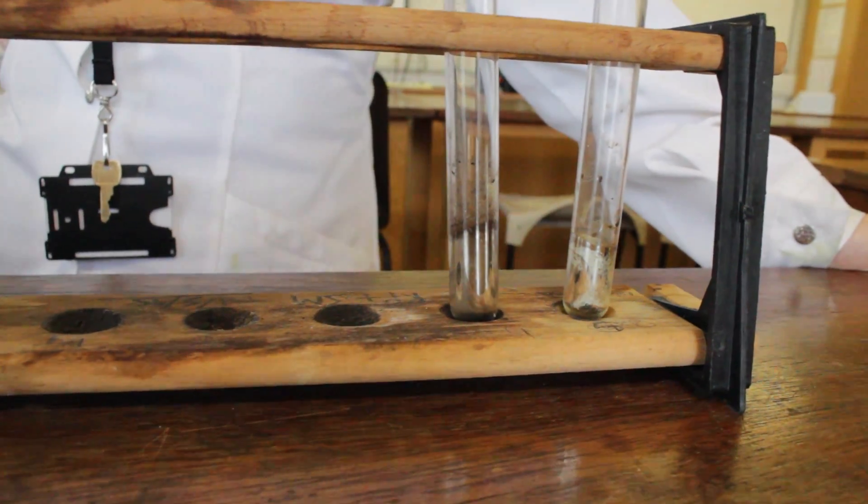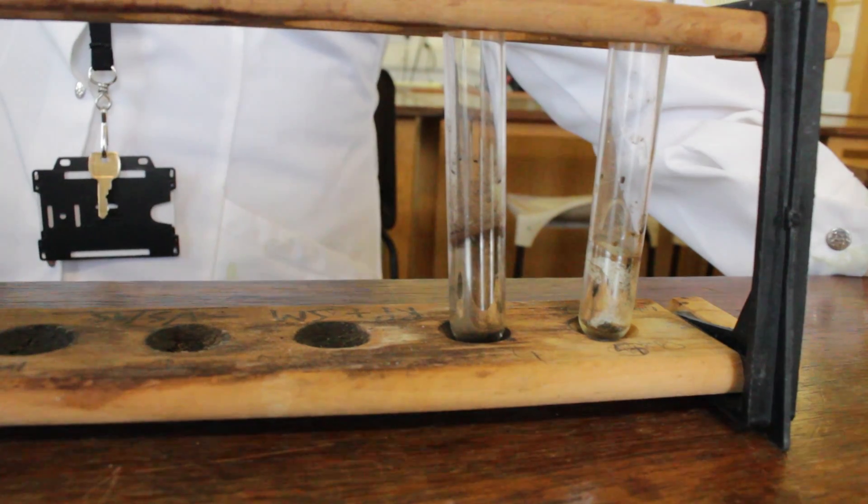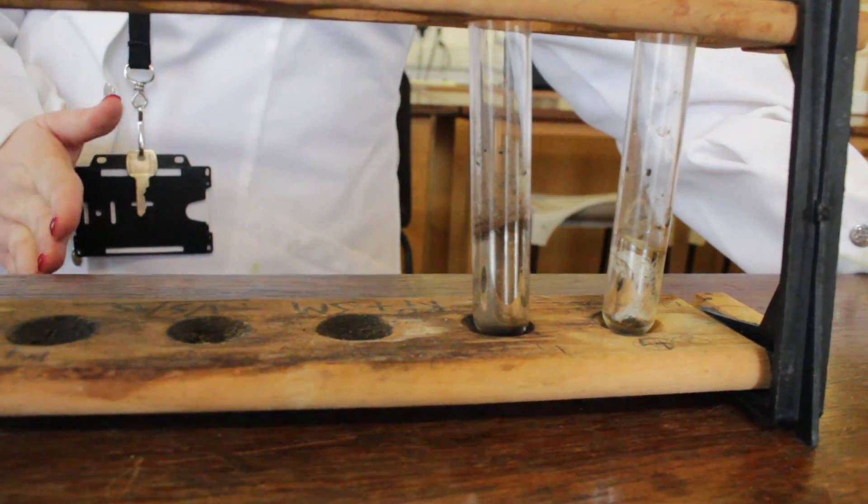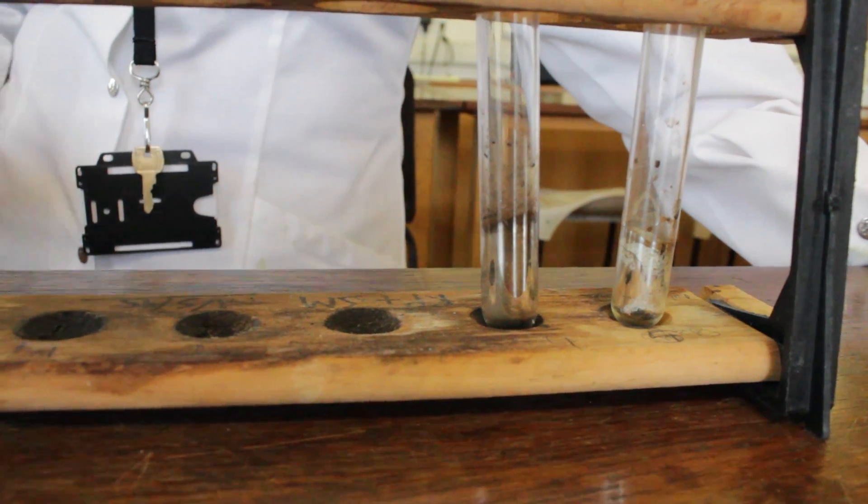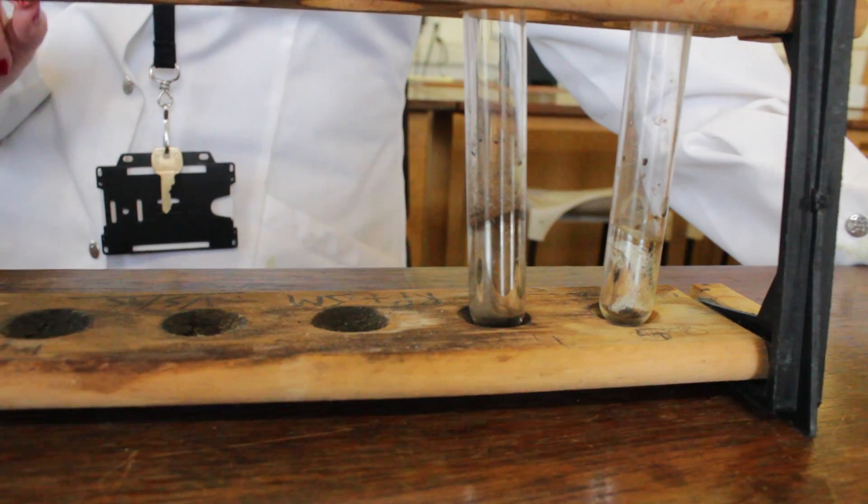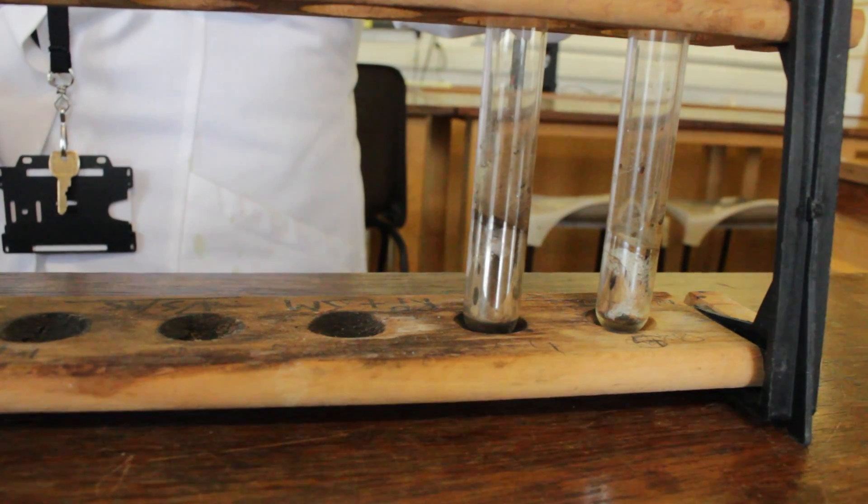The test we're doing today is the silver mirror test. It's a test used to distinguish between two carbonyl compounds, either an aldehyde or a ketone. Today we are going to use an aldehyde which should give us a positive test in which a silver mirror forms around the side of a test tube.